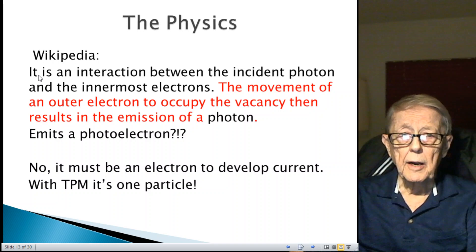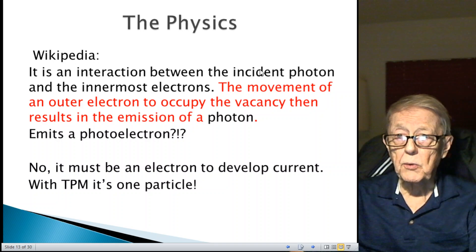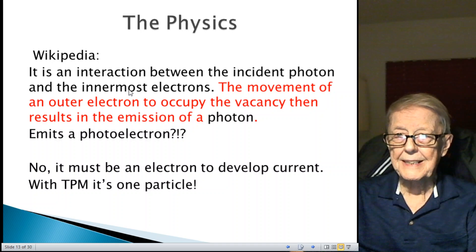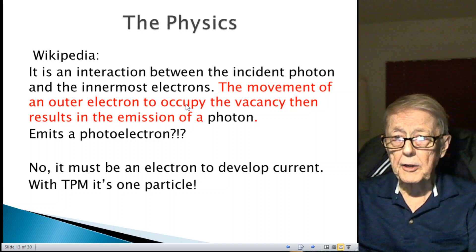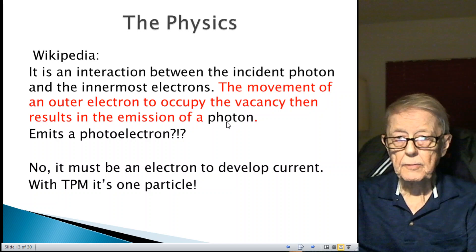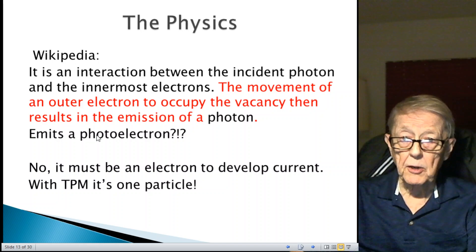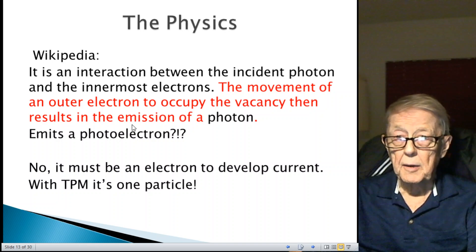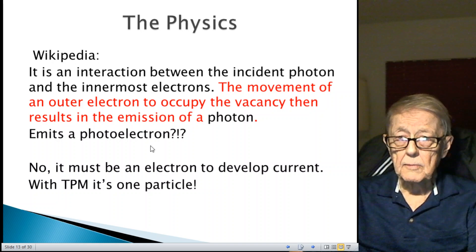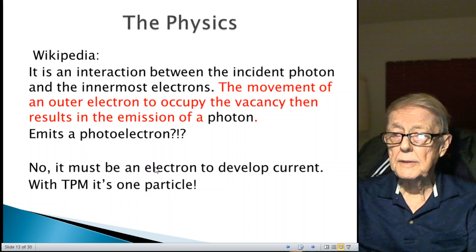Let's talk about the physics of what happens when the photon hits the material. The same Wikipedia that I gave you for the definition of the photoelectric effect, this comes from that same source. It's an interaction between the incident photon and the innermost electrons. It says the photon has to hit the innermost electron. The movement of an outer electron, it's a different electron, to occupy the vacancy then results in the emission of a photon. Of course, sometimes they can be called a photoelectron. Here it's emitting a photon or the photoelectron, and yet we're also saying it's an electron. It's very confusing. They use these terms interchangeably, but it's confusing about what they're talking about.